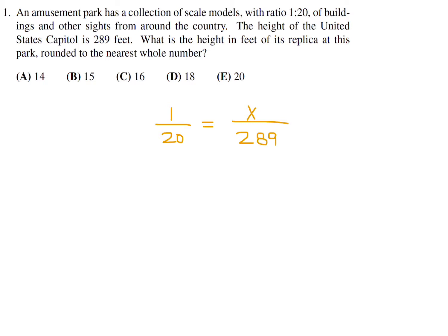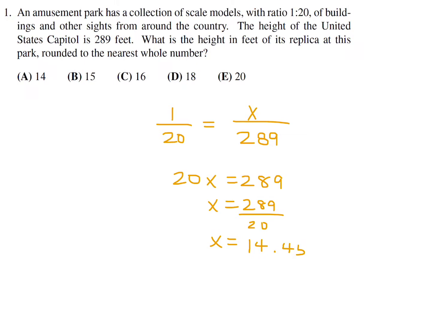Cross multiply and you get 20x equals 289, so x equals 289 over 20. The exact decimal value is 14.45, and therefore rounded to the nearest whole number it would be 14. Number 1, the answer is B.